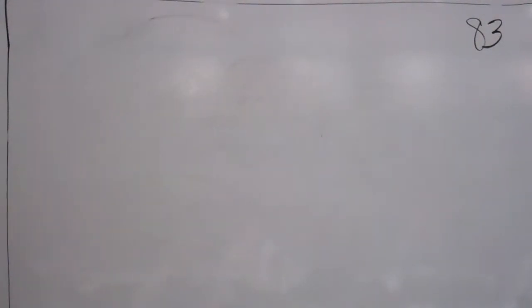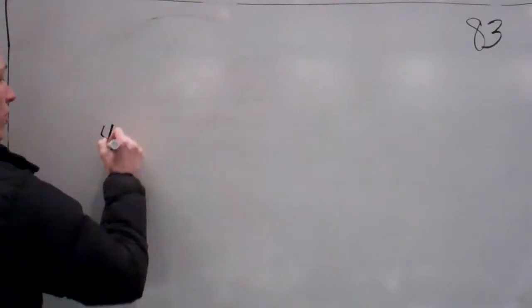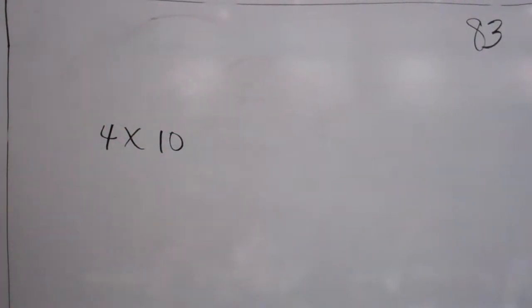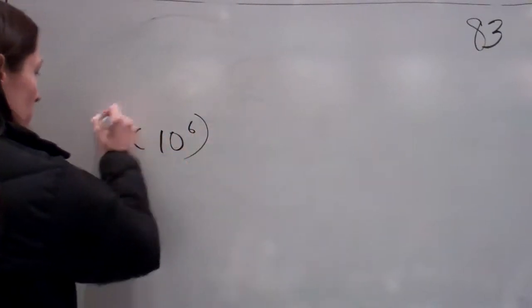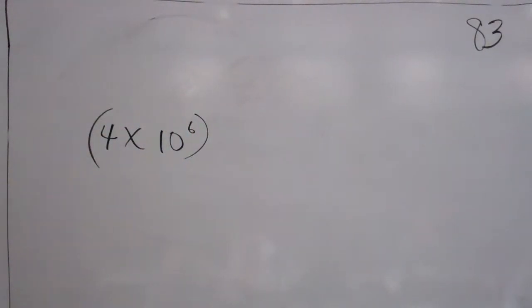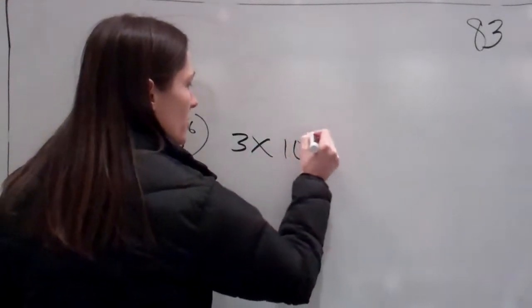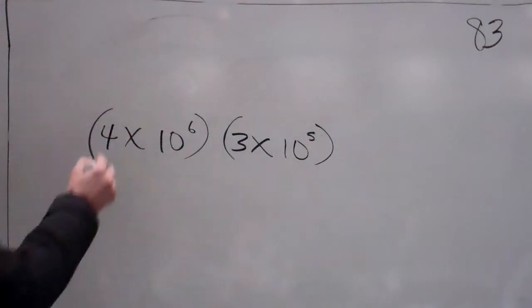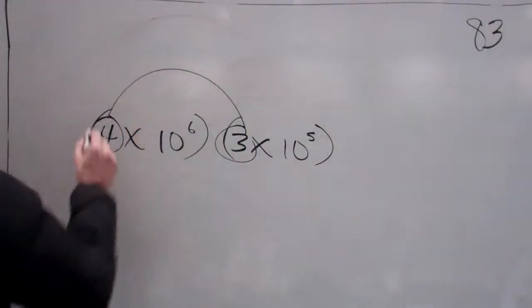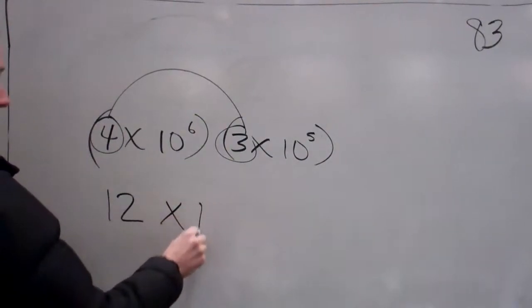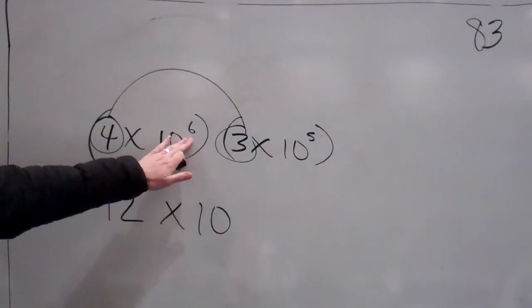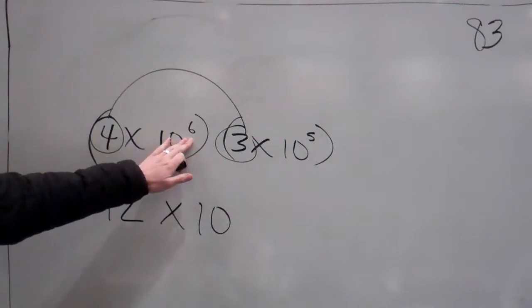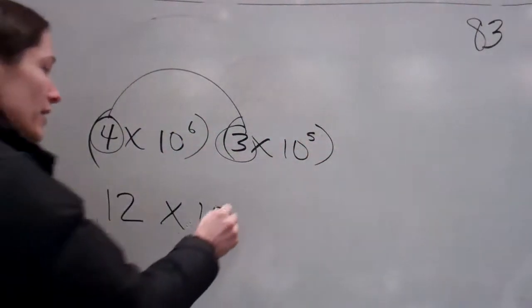So the next one, let's see if y'all can do this. This one says four times ten to the sixth power. And they're wanting us to multiply that by three times ten to the fifth power. Now, what's my very first step? Multiply the numbers. Multiply the numbers. Four and three, let's do that. We get 12. Times ten, six.